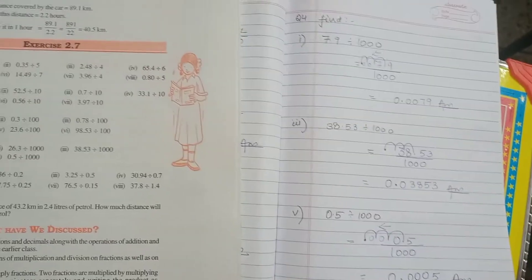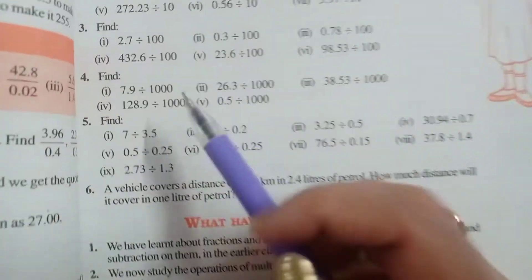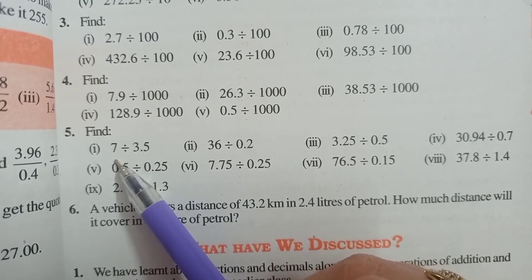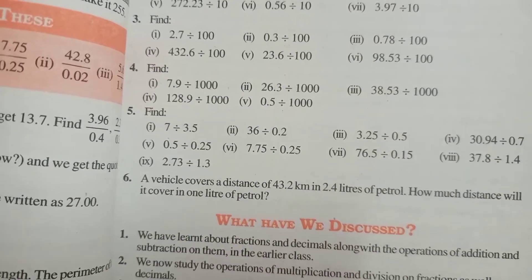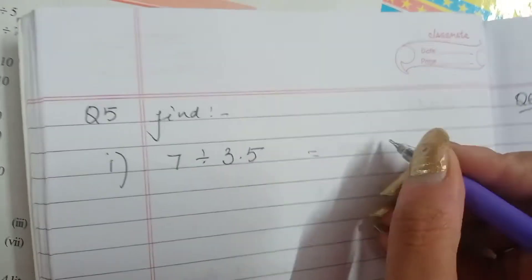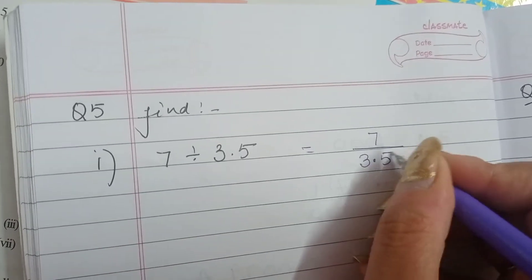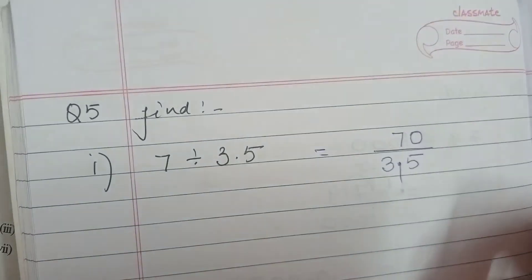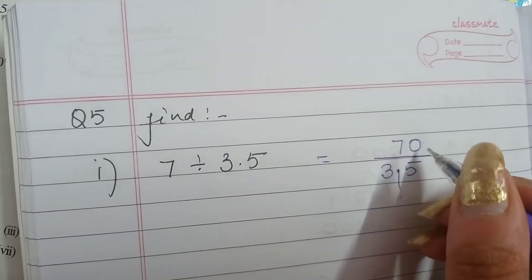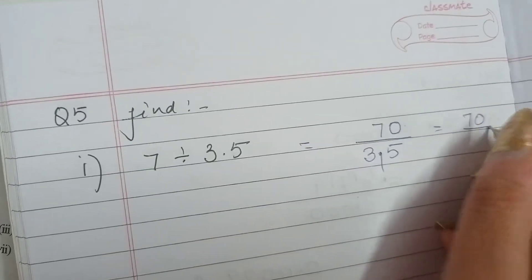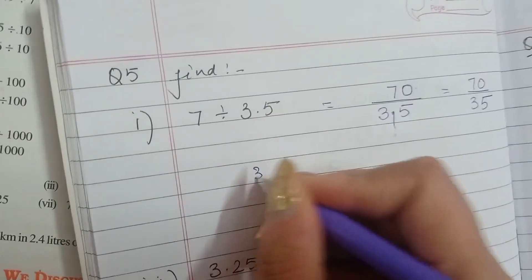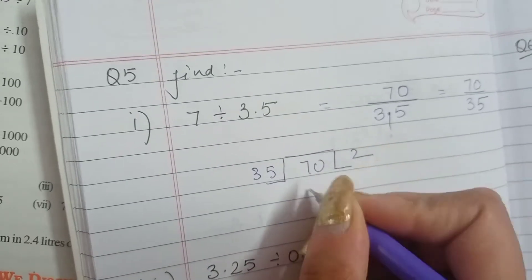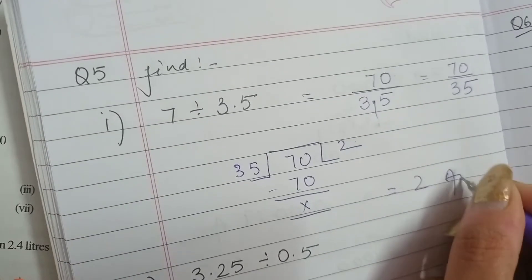So this was question number 4 of exercise 2.7. Let us move ahead with question number 5. In question number 5, a whole number is in front and a decimal number is after the division sign. That decimal number is now our divisor. First, write the given numbers in fractional form. We will remove the decimal from the denominator and add a 0 to the numerator. It has become 70 upon 35. We divide 70 by 35 and the answer is 2.